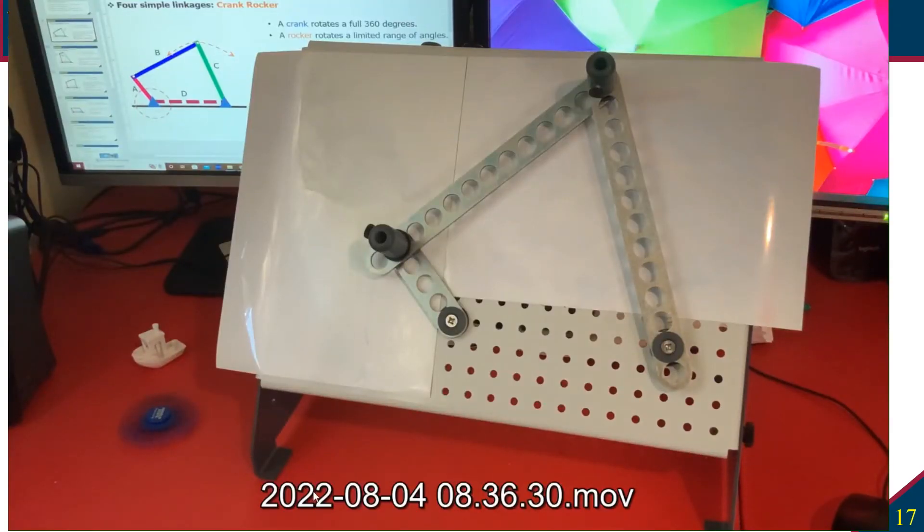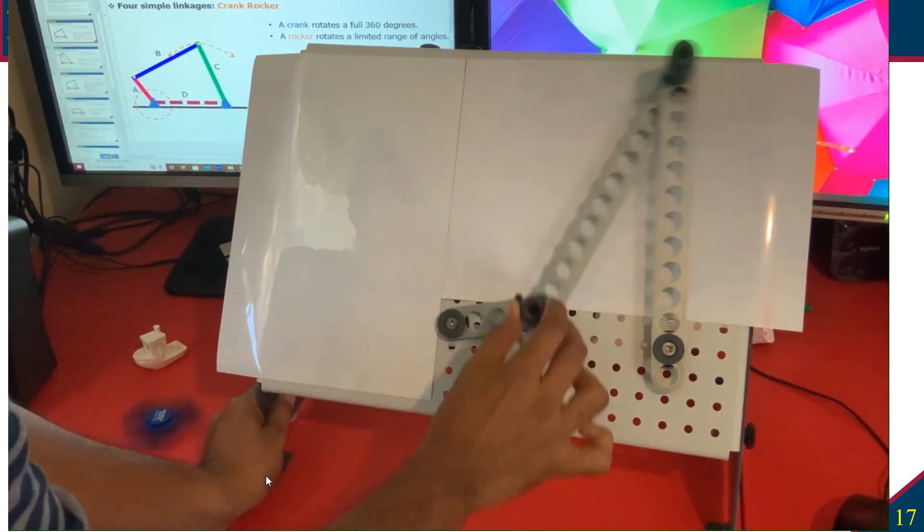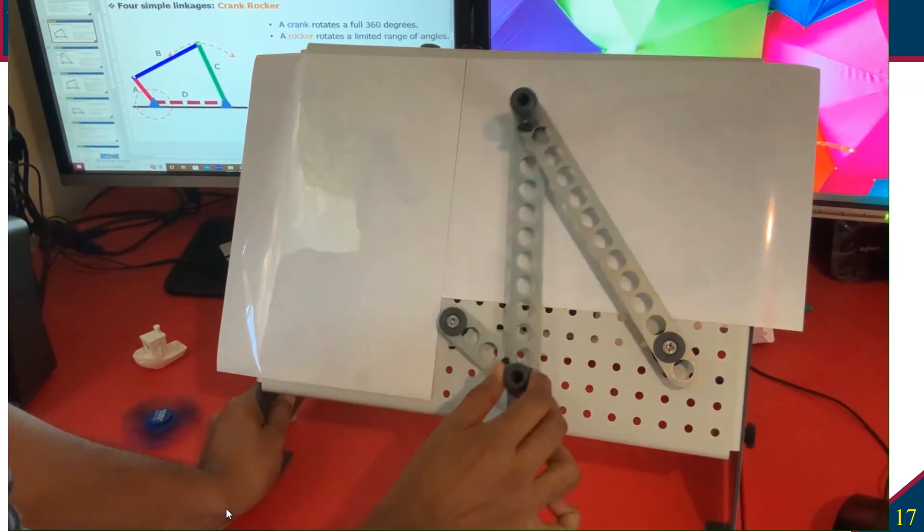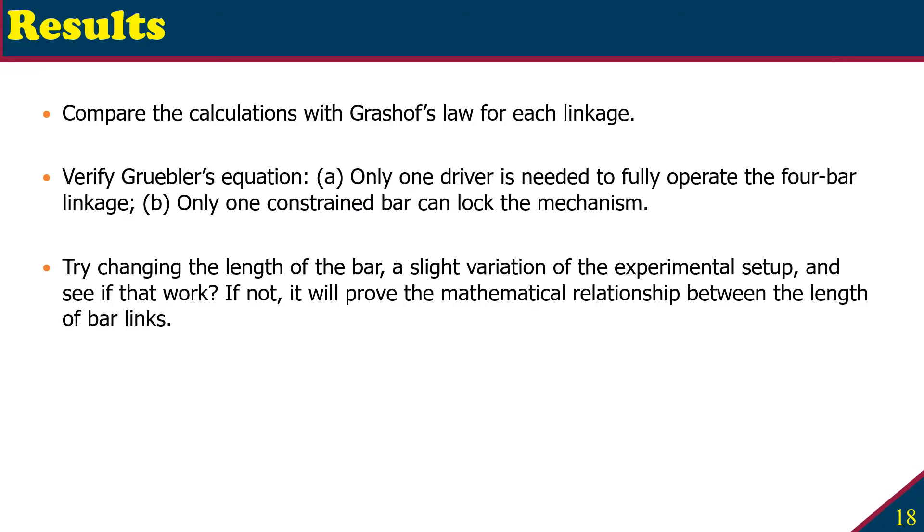That concludes our four arrangements. Now let's move on to our discussion section. You have seen the test arrangement, how to arrange those linkages and do the test. For your results section, remember you have the data collection and made the summation on the right column. From those results you have to compare with Grashoff's law for each linkage, whether they verify or validate Grashoff's law.